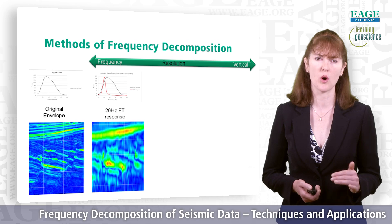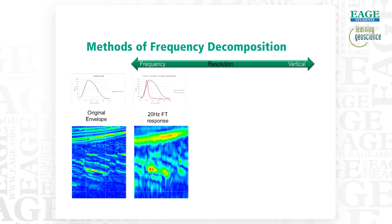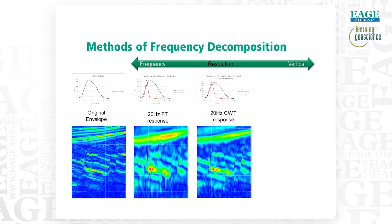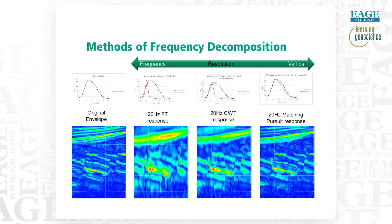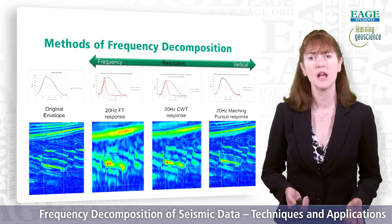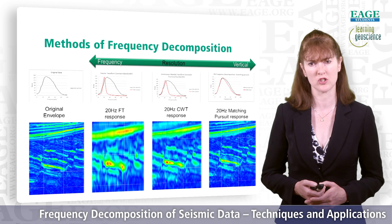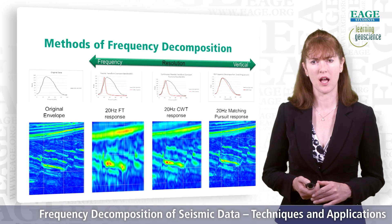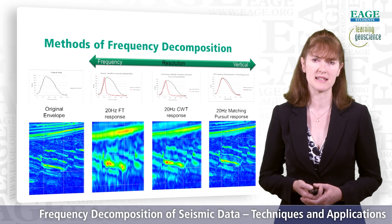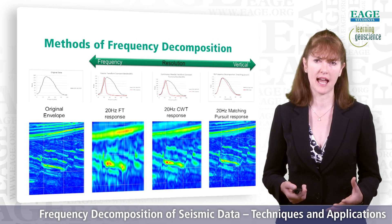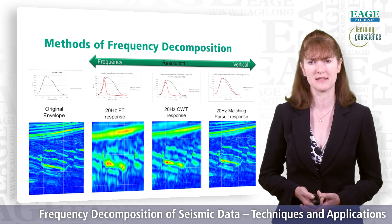It's hard to define exactly where the top and base of those high-amplitude layers are. Looking at the continuous wavelet transform, again centered on 20 Hz, we see a slightly wider bandwidth, giving slightly less frequency resolution but improved vertical resolution, so responses are more localized. And taking this further into the matching pursuit, again centered on 20 Hz, we have a much wider bandwidth, giving much better vertical resolution — the layers are more distinct and we can see clearly where the top and base of each event is — but our bandwidth is wider, so there's less frequency resolution.